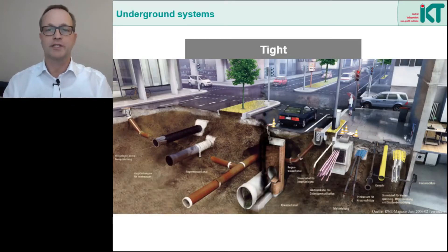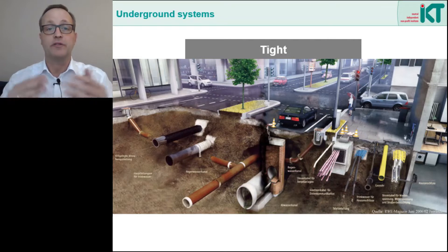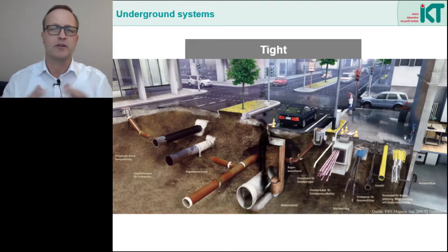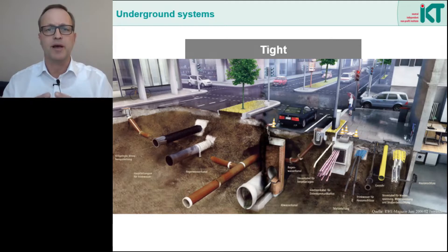As we know, sewers and pipelines must be tight. If they are not, what flows through the pipeline is no longer cleanly separated from the environment. On the one hand, the conveyed medium can leak out of the pipe, but on the other hand foreign substances can also get into the pipe — and both of these processes are not welcome. Nobody wants germs in the drinking water, nobody wants sewage in the groundwater, and nobody wants an inflammable air-gas mixture underground. In the case of deep-seated sewers that are leaking, groundwater can also enter into the sewers, and sometimes sewers and sewage treatment plants are flooded with groundwater.